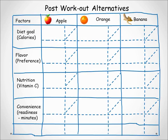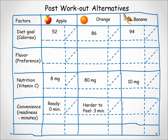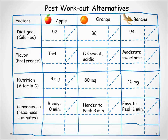Next we list the attributes under each factor with the criteria it supports, then identify the attributes of each alternative. An apple has 52 calories as an attribute for diet goal, an orange has 86 calories, and the banana is 94 calories. We repeat this for nutrition in milligrams of vitamin C, and for convenience in minutes. For flavor, a descriptor is listed on which to differentiate the fruit. After filling in the data, we underline the least preferred attribute in each factor — for diet goal, the highest calorie count is least preferred — and repeat this for all the other factors.